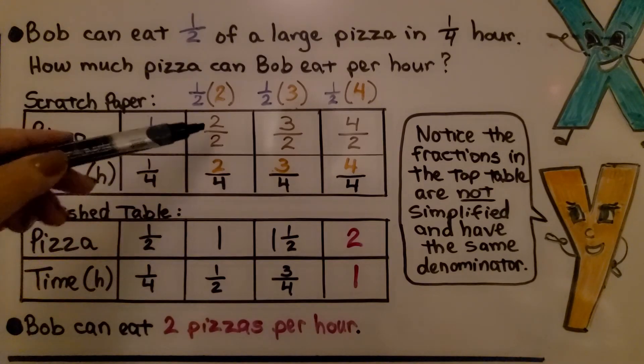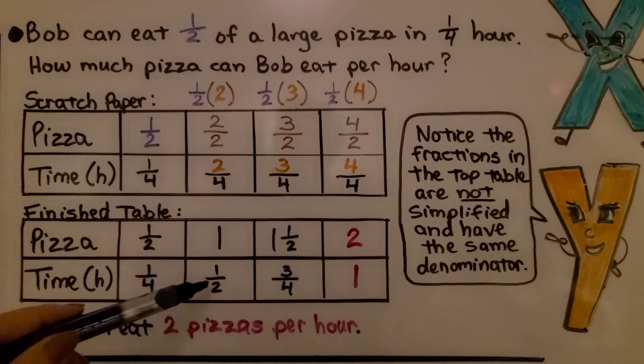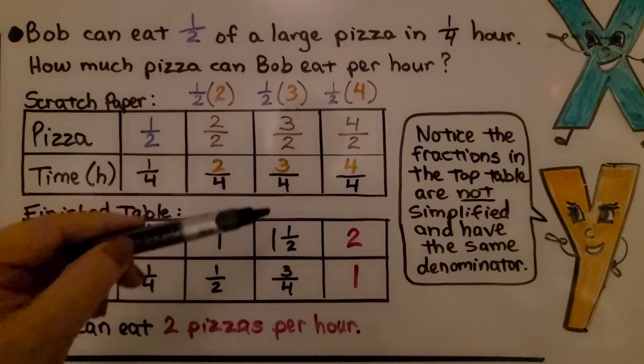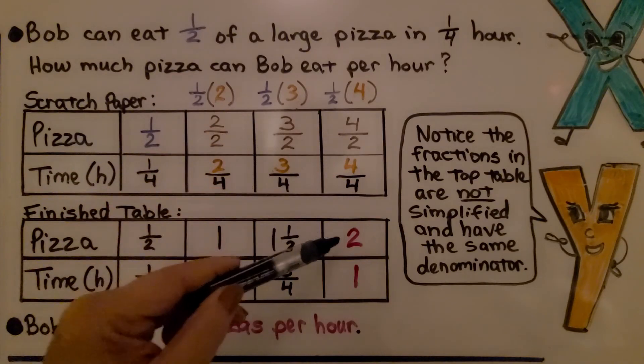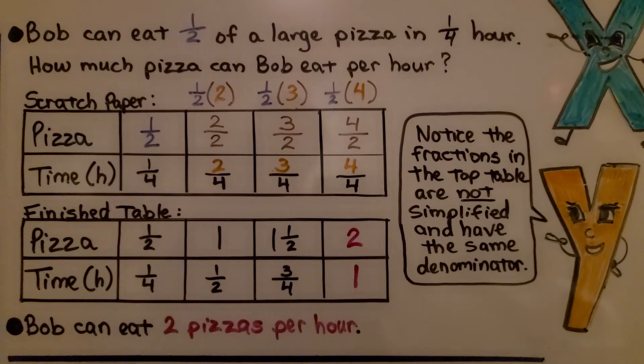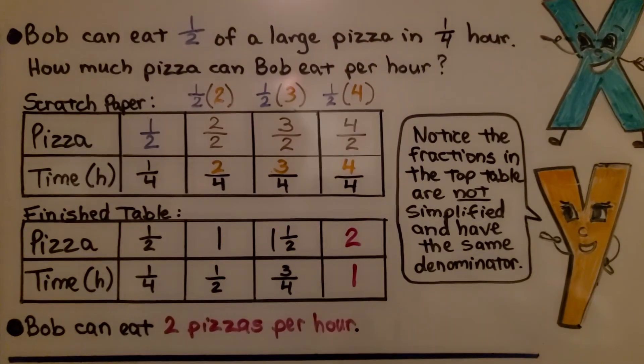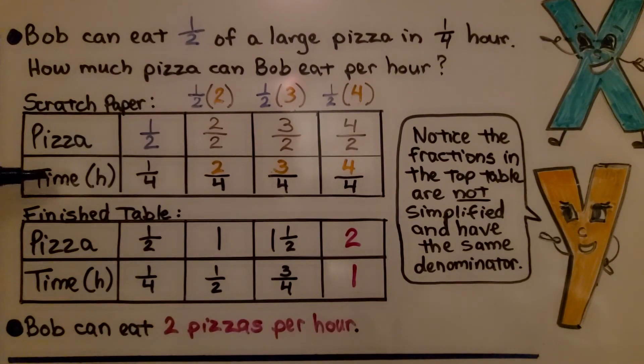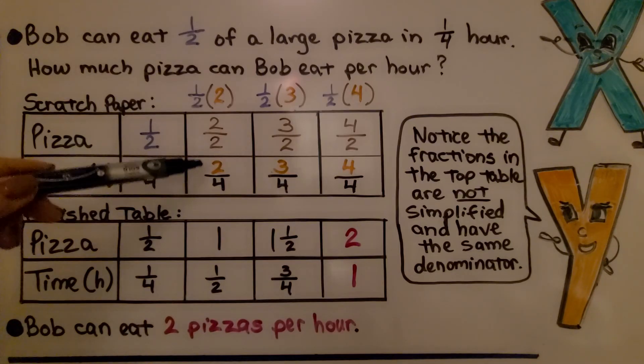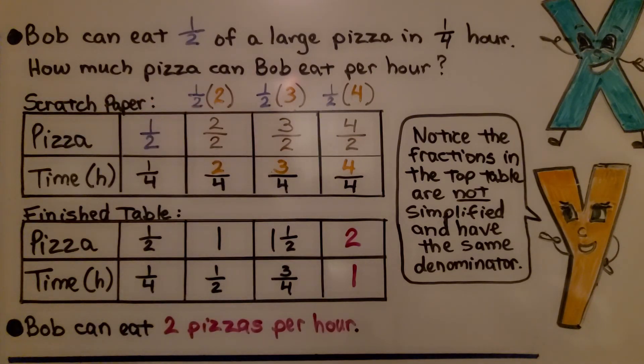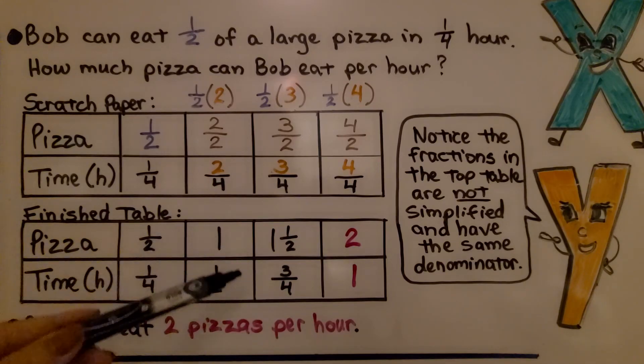Instead of two halves and two fourths, we can have one and one half. Instead of three halves and three fourths, we have one and a half and three fourths. Instead of four halves and four fourths, we can have two and one. That means Bob can eat two pizzas per hour. By using the same denominator for time on our scratch paper table, we can multiply one half by each numerator of time to find the quantity of pizza. Then we can make a finished table with simplified fractions.